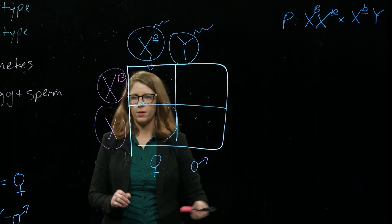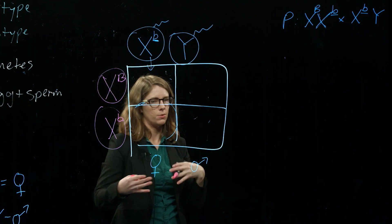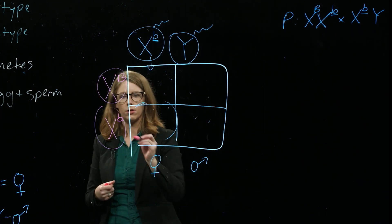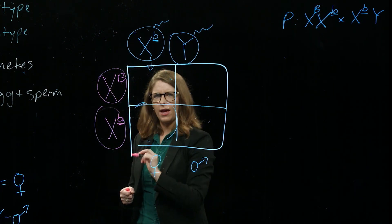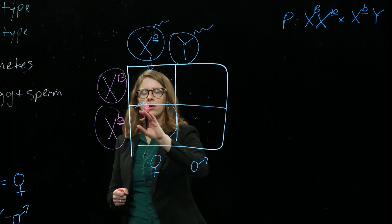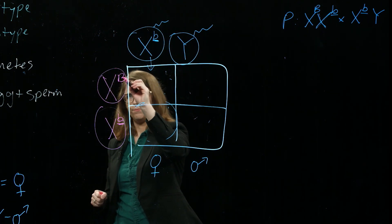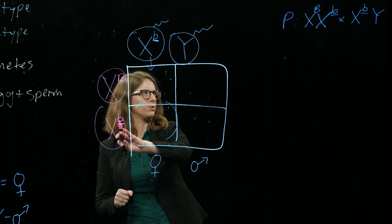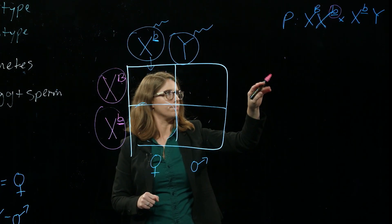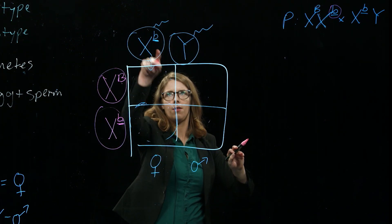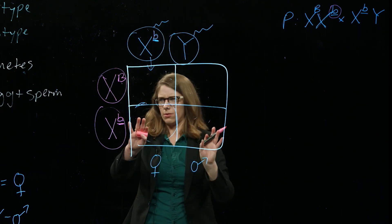So now we're going to do a cross of a woman who's a carrier for colorblindness. A carrier is someone who carries the gene but is not afflicted with it themselves—they're heterozygous. She has the gene for colorblindness but is protected by that gene over there. This X chromosome she got from dad, this X chromosome she got from mom. Let's cross her with another guy who is also colorblind.